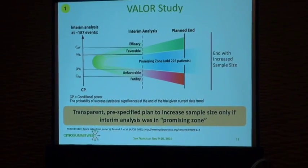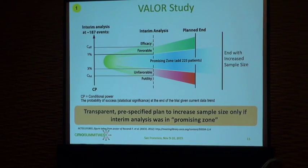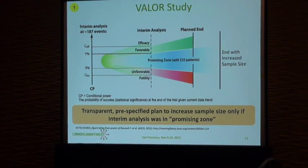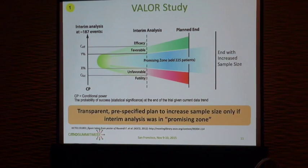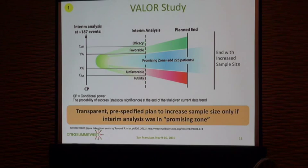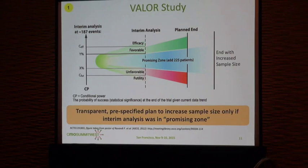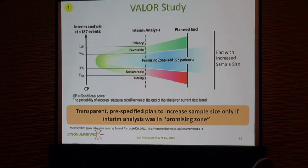It's essentially how well ahead you are. If you've got a strong trend, you'd have high conditional power; otherwise low, or something in between. As part of the design, you have levels of observed efficacy at that point with cut-offs. If it's very high, you'll essentially be able to show significance with the existing sample size. If it's very low, there's no point going further. If it's in a promising zone — good but not adequate — the original sample size is not enough, and the design increases it by 50%. In the favorable or unfavorable zones, you continue to the planned end without changing the sample size.